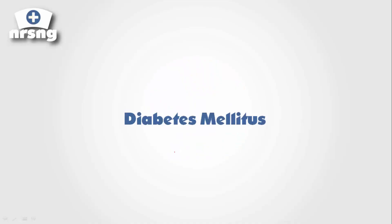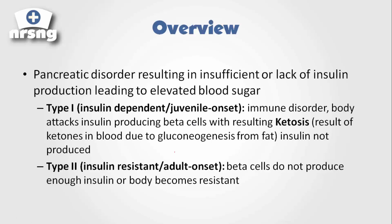Diabetes mellitus is a very common disorder, and unless you've been living under a rock, you should have some basic understanding of what diabetes is. Let's dive into the specifics and what differentiates type 1 from type 2, and some of the concerns we have with our patients. Diabetes is a pancreatic disorder resulting in insufficient or lack of insulin production, which leads to elevated blood sugar.